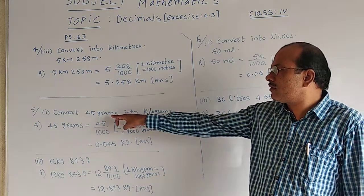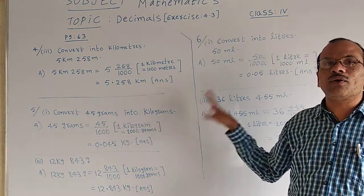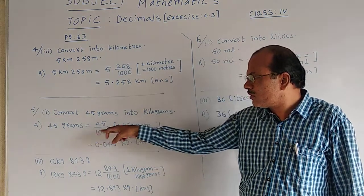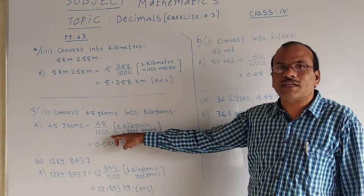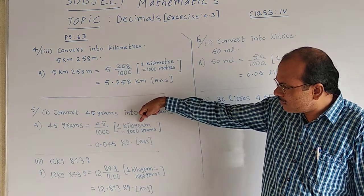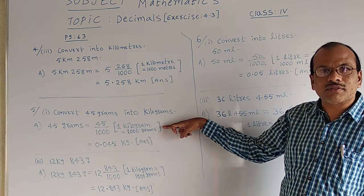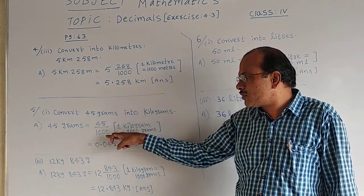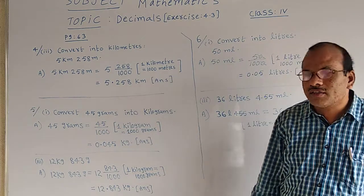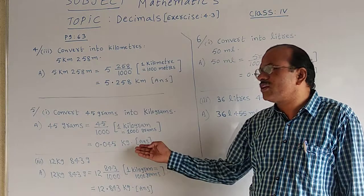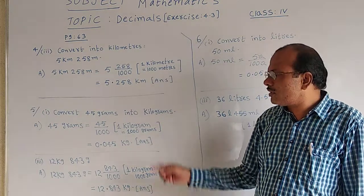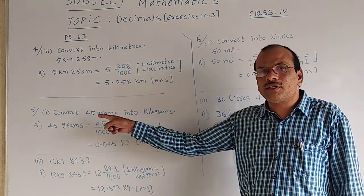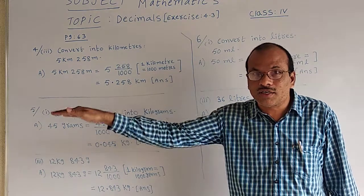Convert the given 45 grams into kilograms — same as the previous method. 45 grams is equal to 45 divided by 1,000. Why? Because 1 kilogram is equal to 1,000 grams. That's why I have divided by 1,000. Since 3 zeros are there, 5 should be arranged after 3 digits in the numerator.